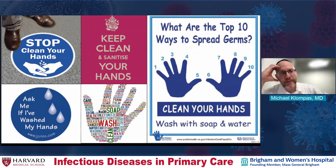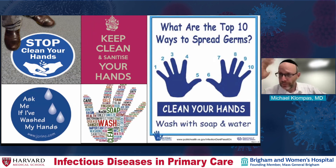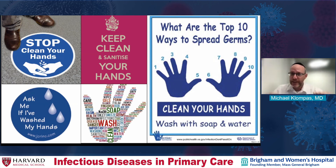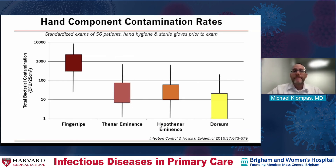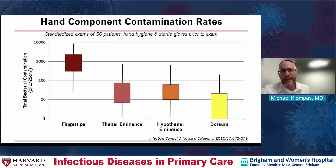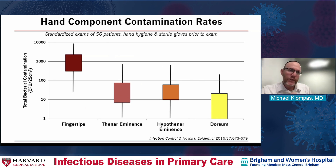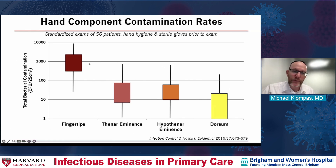Here are some of my favorite hand hygiene posters. My favorite is the one on the right: 'What are the top 10 ways to spread germs?' Now, looking at the way people wash their hands, we find that even when we do wash our hands, we don't necessarily do the best job. Looking at bacterial counts on different parts of the hand after hand hygiene, the most bacterial contamination, even despite hand washing, is on the fingertips. The rest of the hand is actually pretty good.